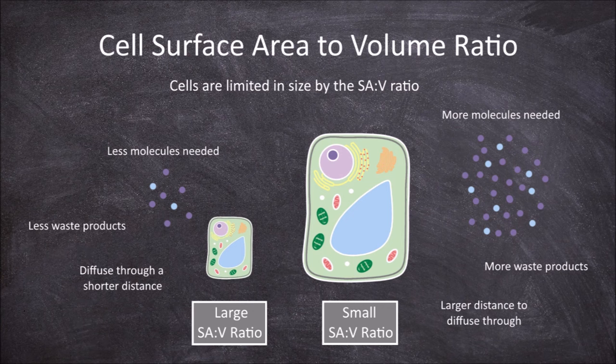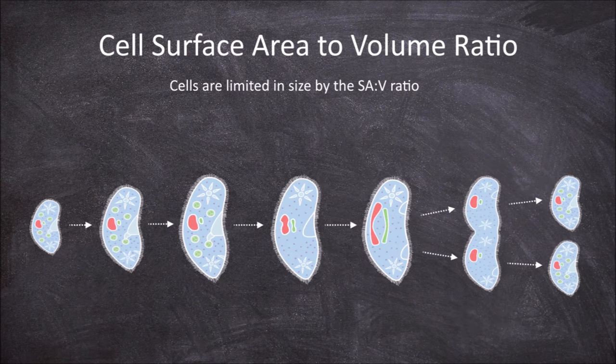This is why growing cells often divide via mitosis or binary fission — to remain small and maintain a high enough surface area to volume ratio to enable survival of the cell.